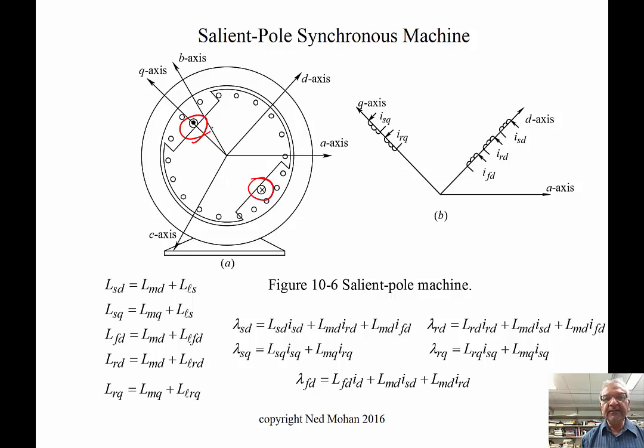The damper winding is just like an induction machine. In the rotor, there's a squirrel cage—bars inserted parallel to the axis of the shaft, short-circuited on both sides. The same thing is done here.